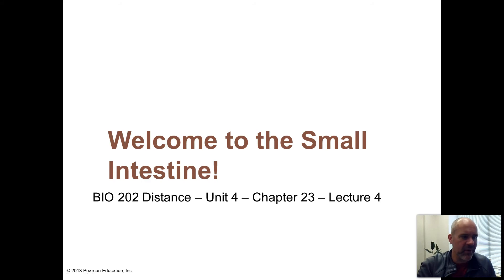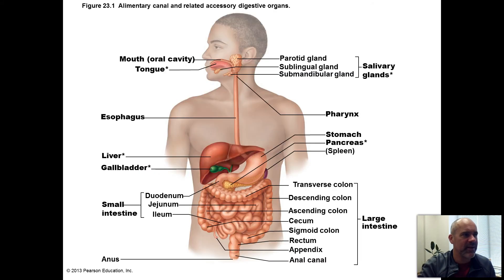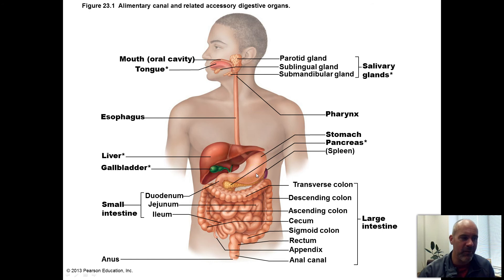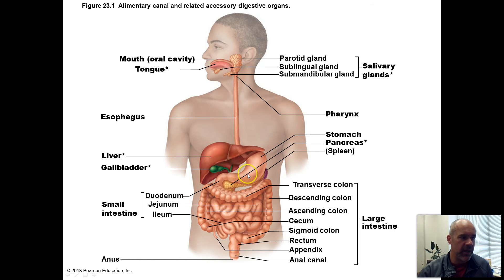Welcome to your small intestine. We're moving along here with the digestive system. To review, we started up in the oral cavity. You swallowed your food bolus, went down the esophagus, passed through the esophageal hiatus in the diaphragm, through the gastroesophageal sphincter, down into the stomach where it got churned around with pepsin and hydrochloric acid to denature proteins and start digesting them into smaller chains of amino acids.